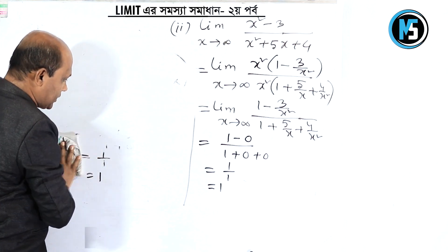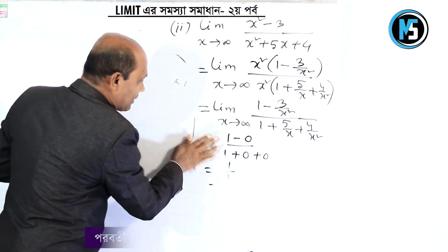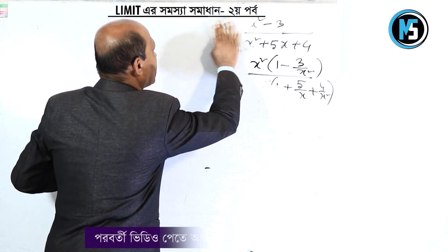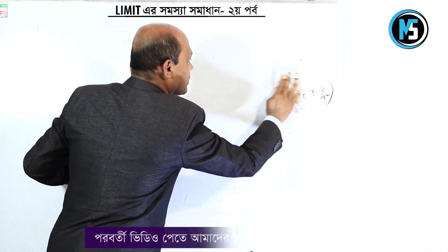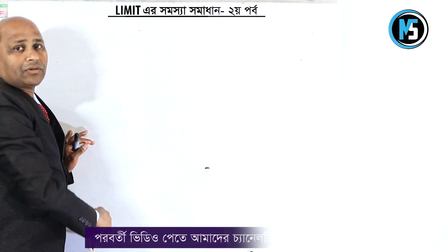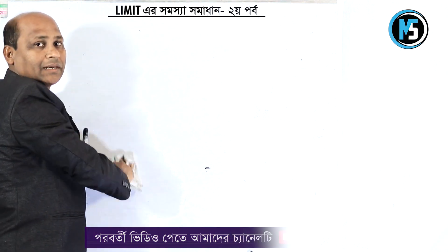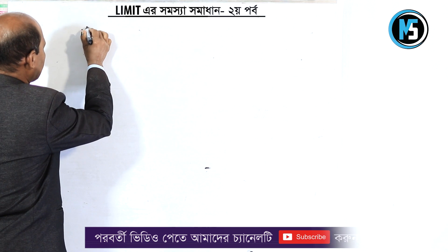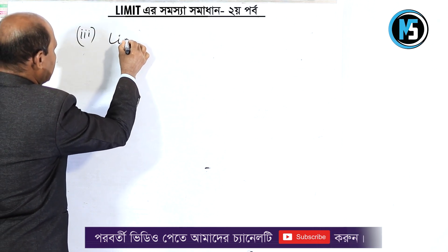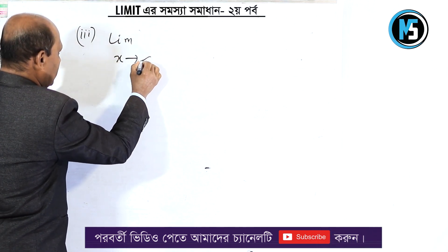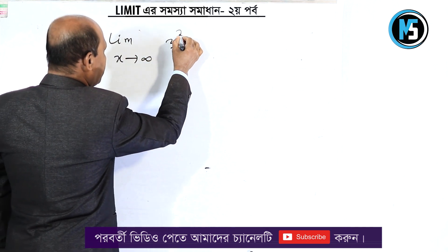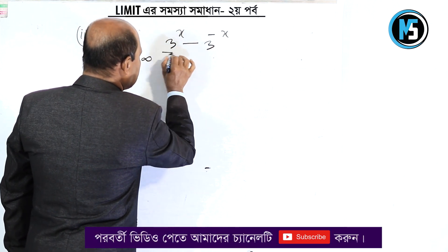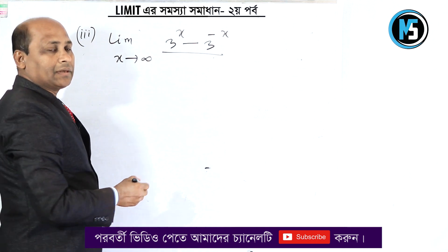I am going to write this process. I will write this process. Limit x tends to infinity: 3 to the power x minus 3 to the power minus x, divided by 3 to the power x plus 3 to the power minus x.